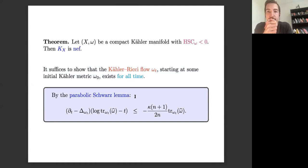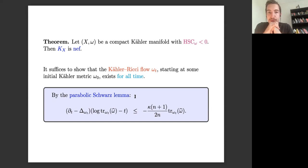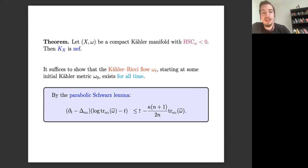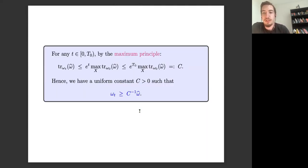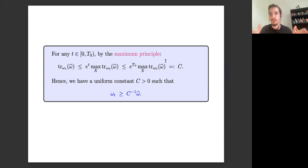The first thing we want to prove: given a compact Kähler manifold with a Kähler metric of negative holomorphic sectional curvature, the canonical bundle is NEF, or equivalently the Kähler-Ricci flow exists for all time. By the parabolic Schwartz lemma we just proved, via the maximum principle we get a uniform constant c such that ω_t ≥ c⁻¹ ω̂. Most of the work is in getting the Schwartz lemma; once you have it, life is not so difficult.